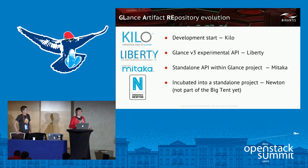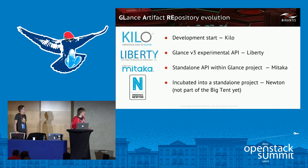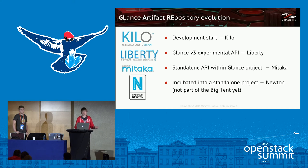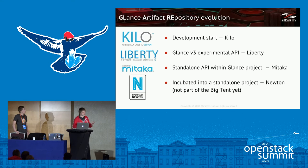We had long conversations with different stakeholders in the community. Finally, we decided that instead of being V3 of the Glance or Images API, we should have a new standalone API called Artifacts API or Glare API. This happened in Mitaka — we made a standalone API specification for Artifacts API. And in the Newton cycle, the working group split into a standalone project called Glare.